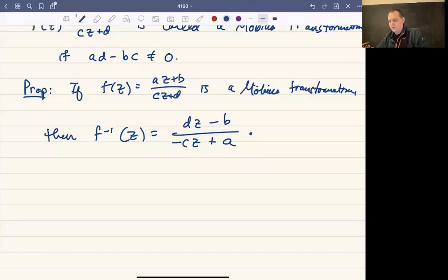Another property of Mobius Transforms is that every Mobius Transform is a combination, really a composition, of dilations, rotations, and translations.